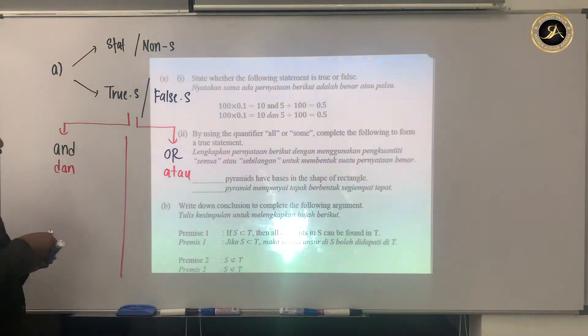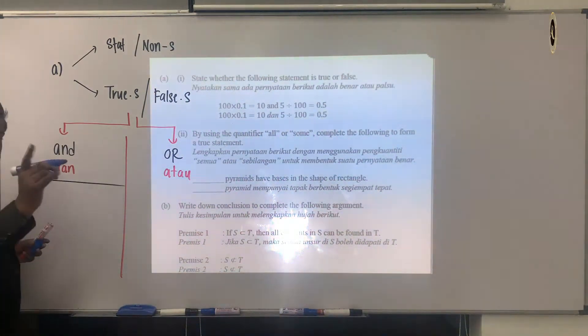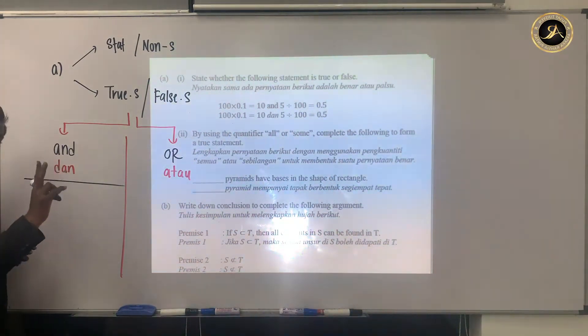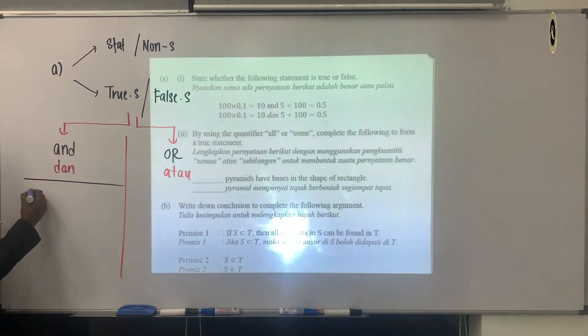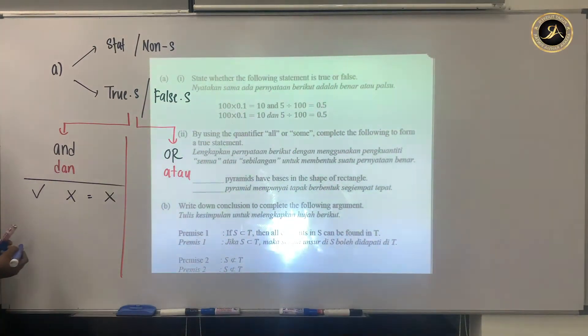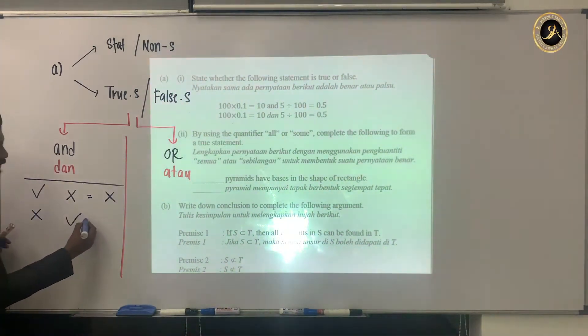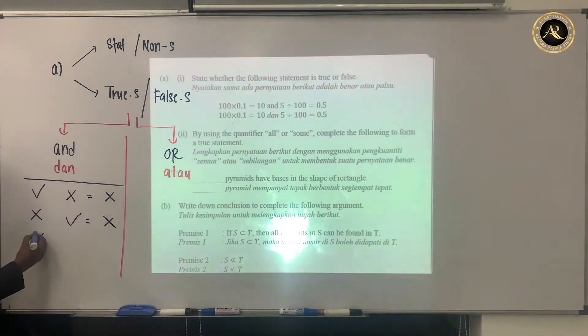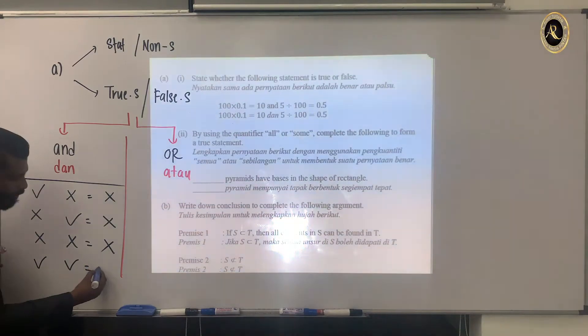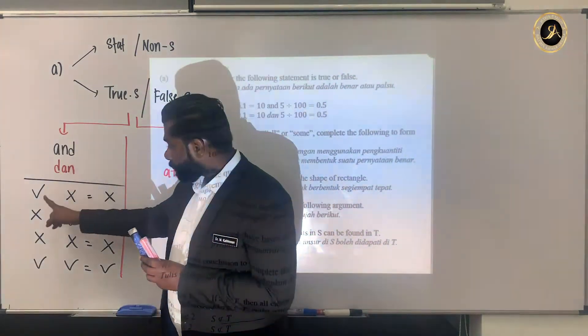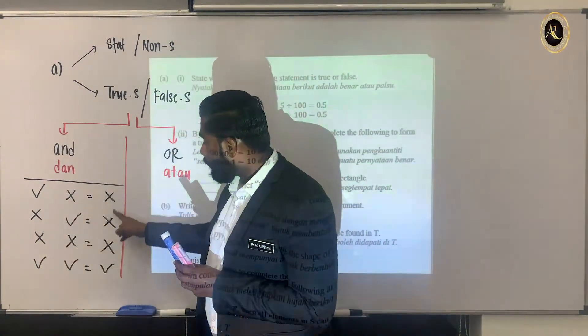When they use 'and', you must be very clear. For 'and', if one is correct and one is wrong, the answer automatically is wrong. One wrong, one correct—answer is wrong. For 'and', if both are wrong, the answer will be wrong. Both correct, then only the answer is correct.